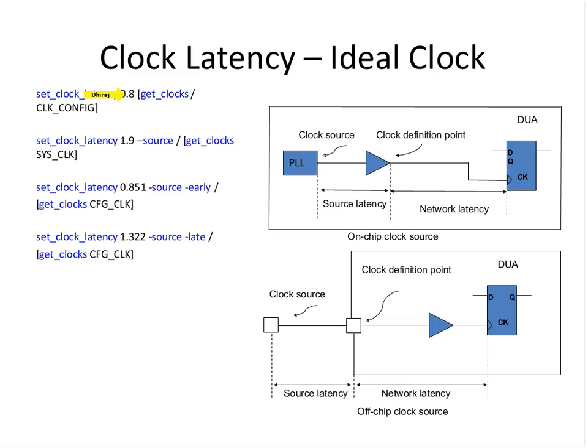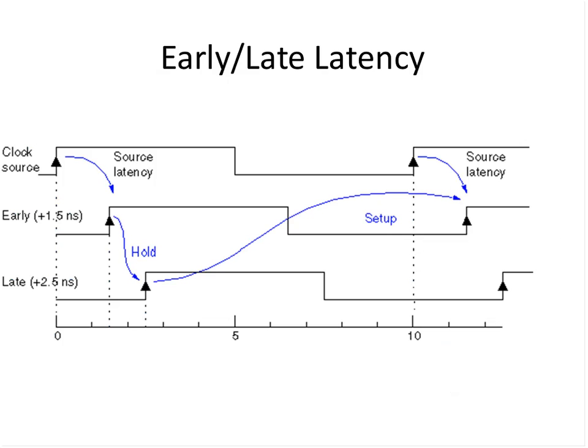Be careful while using source and network latency — know what affects your STA and what does not. If you give a uniform source latency for a single-clock design, it does not make any difference to timing analysis. However, if you do something like minus_early and minus_late, this will make a difference because the values are different. Now let us see what prime time does with minus_early and minus_late options.